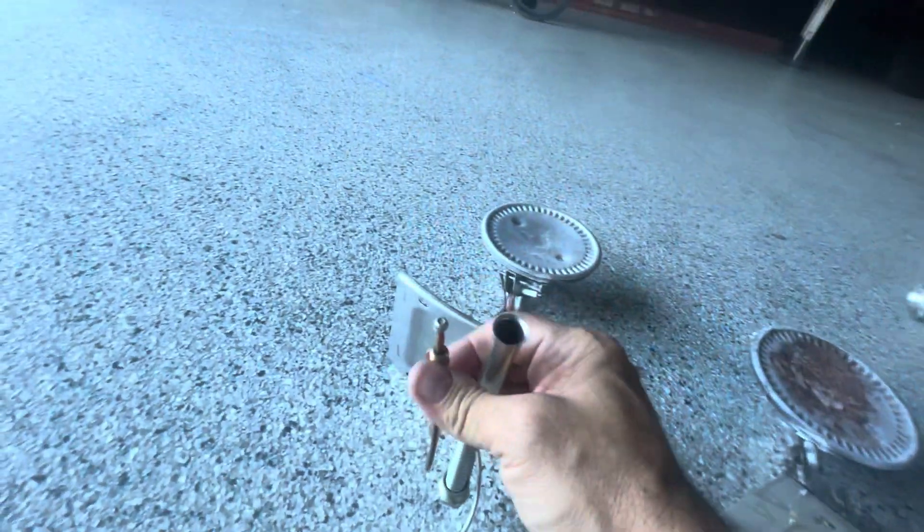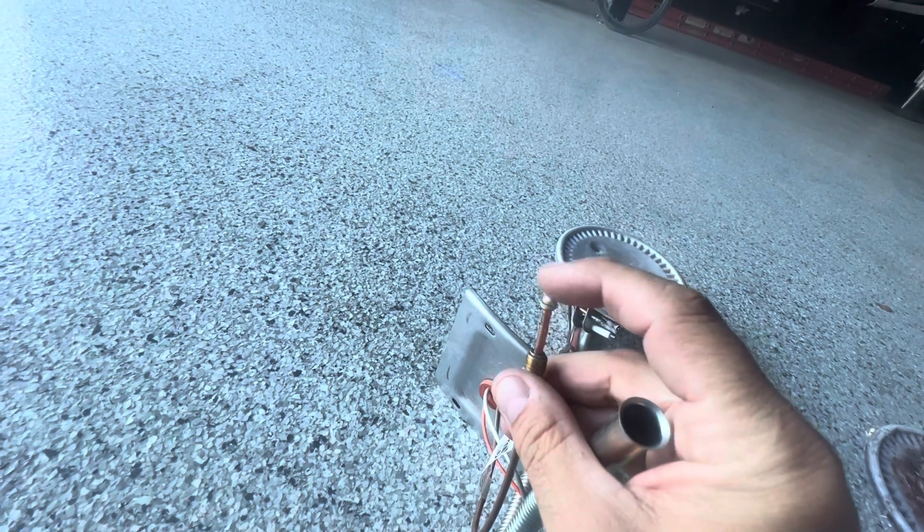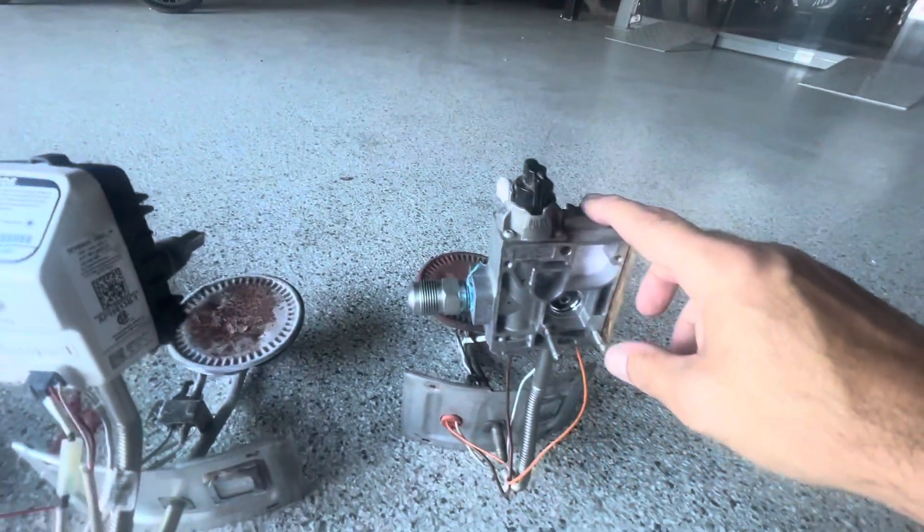The thermocouple is right here. So we've got the outer metal and then a dissimilar metal up here that will screw into the mechanical gas valve.